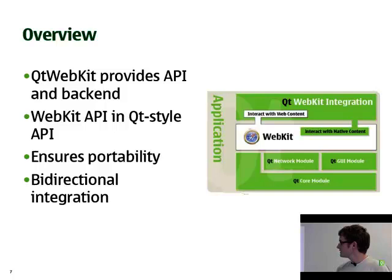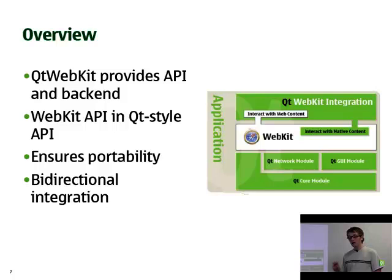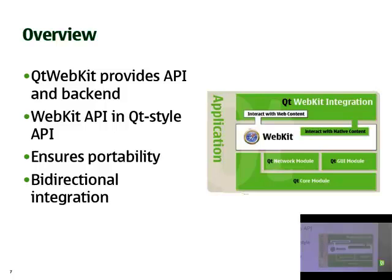As you see from this illustration, we provide both an API on top of WebKit as well as the backend — the parts of WebKit where it needs to reach out to the internet or draw to the screen. The WebKit API provides functionality in the familiar Qt style API. Basing WebKit on Qt ensures portability across all platforms, even Windows CE and Embedded Linux. We also provide bi-directional integration: from within the web environment you can interact with the native side, and from the native side you can interact with the web content.